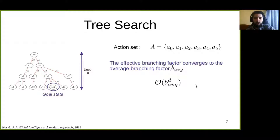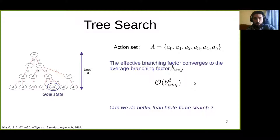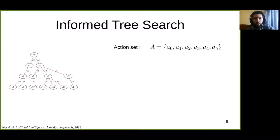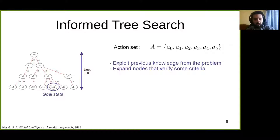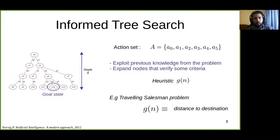In these cases, the complexity of finding a goal state is the average branching factor exponential with the depth of the tree. Another question arises: can we do better than brute force search? Can we exploit some knowledge to find a goal state in less time? This leads us to informed search. In informed search, we exploit previous knowledge about the problem and expand the nodes that verify some criteria. We use some heuristic function g(n). For example, for the traveling salesman problem, g(n) could be the distance to destination. In informed search, we prioritize over what nodes we expand, so for the traveling salesman problem we expand the node that is closer to the goal state.